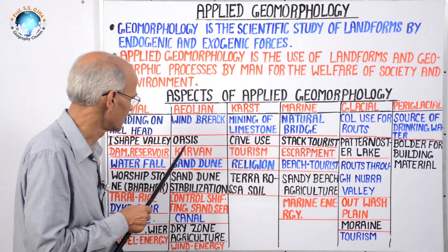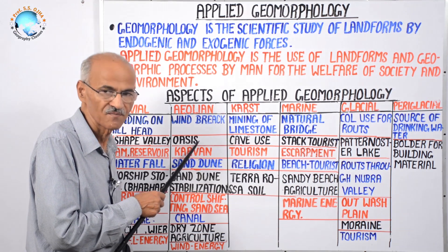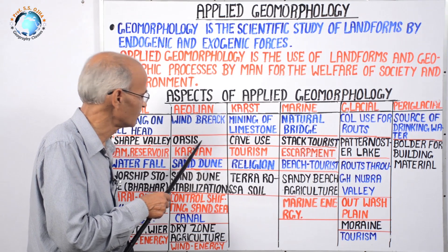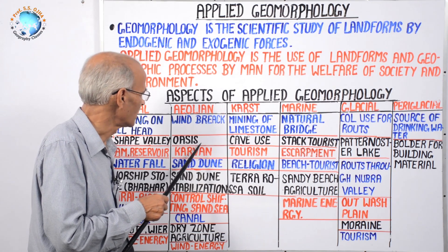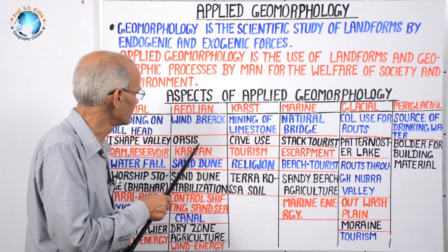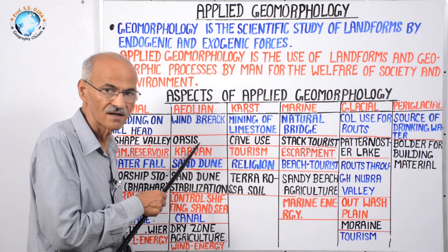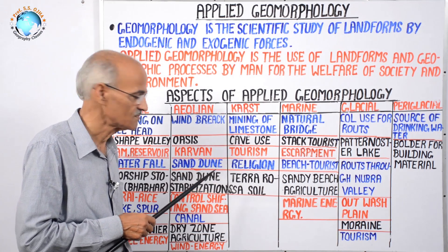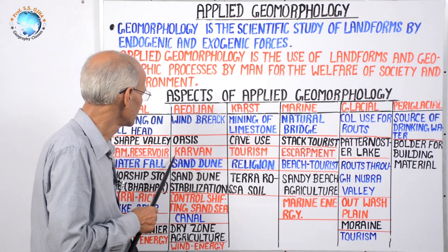Next is oasis. In desert areas, if there is a depression or low-lying area, rainwater collects in it. In the vicinity of that water body, grasses, shrubs, and trees grow, and animals and people inhabit the area because they get water, vegetation, and animals. Sometimes artificial oases are also created by arid geomorphologists.